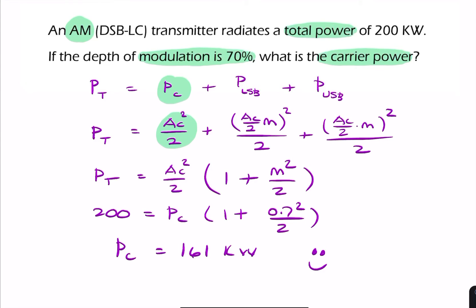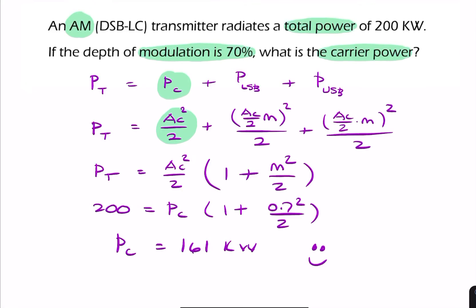Now, another way of doing this is by recognizing that there is a relationship. We can look at the efficiency. The efficiency has this relationship.